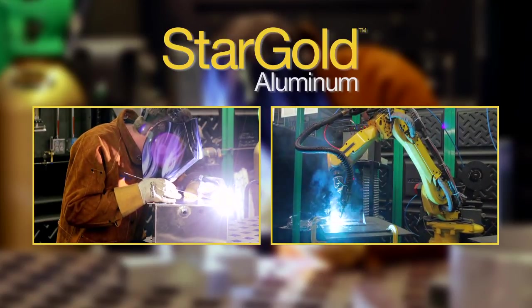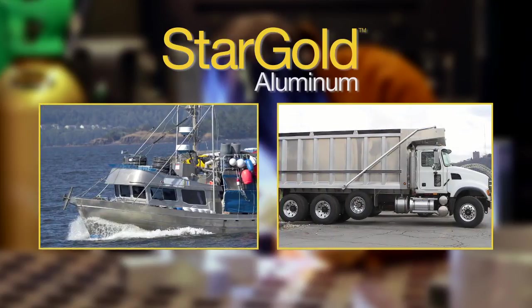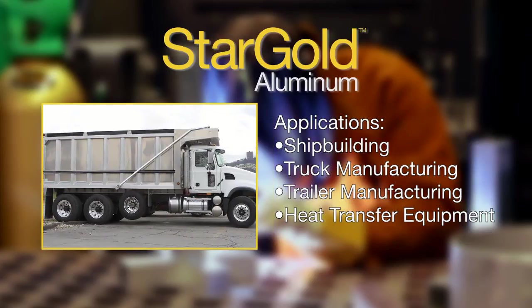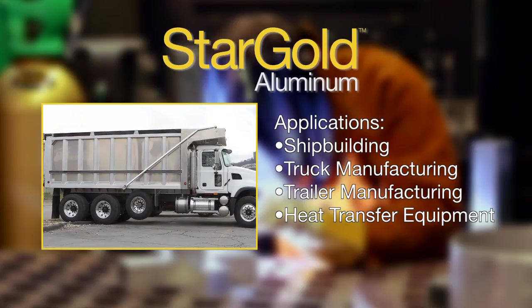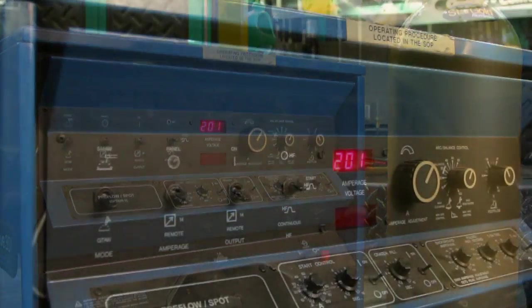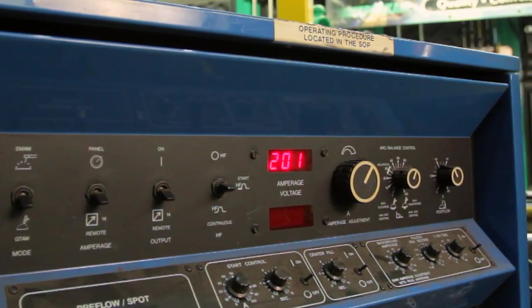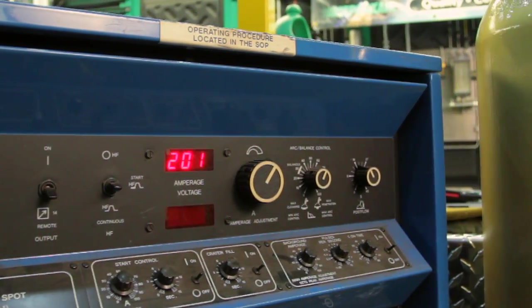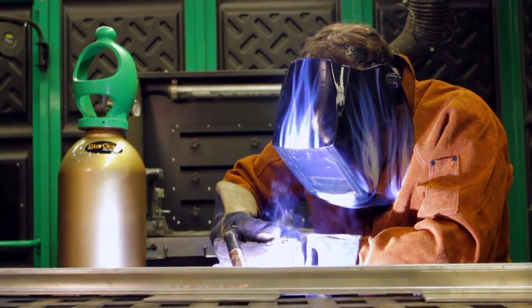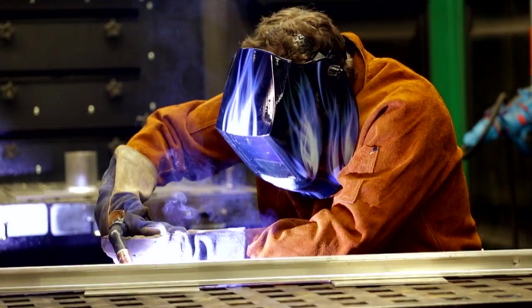Applications for Stargold Aluminum include shipbuilding, truck and trailer manufacturing, and heat transfer equipment using 4,000 and 5,000 alloy series wires. Fabricators using older technology welding machines may see a benefit when switching from argon to Stargold Aluminum as the increased arc stability results in an arc characteristic similar to that of a modern inverter machine.